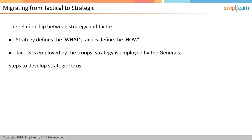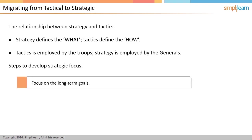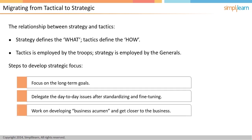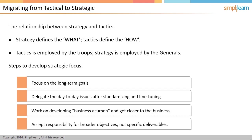To become focused on the strategy, perform the following actions. Focus on the long-term goals, not just on day-to-day problems. Delegate the day-to-day issues; however, delegation does not mean handing it over to the team — it must be done after standardizing and fine-tuning the day-to-day work. This is where the program manager will work closely with the project managers. To become strategic, the program manager will have to develop more business intelligence, because the strategy will be decided based on what is relevant to the business, and the program manager accepts responsibility and accountability to broader business goals, rather than specific deliverables within the program. It is not that deliverables are unimportant — it is just that the program manager needs to think of the goal and not short-term milestones.